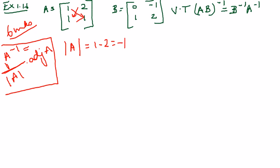Likewise, what is the value of mod B? Mod B is this into this minus this into this, so it is 0 minus of minus 1, which becomes 1. Good, this is also not equal to 0, so we are good enough to proceed to find the inverse.